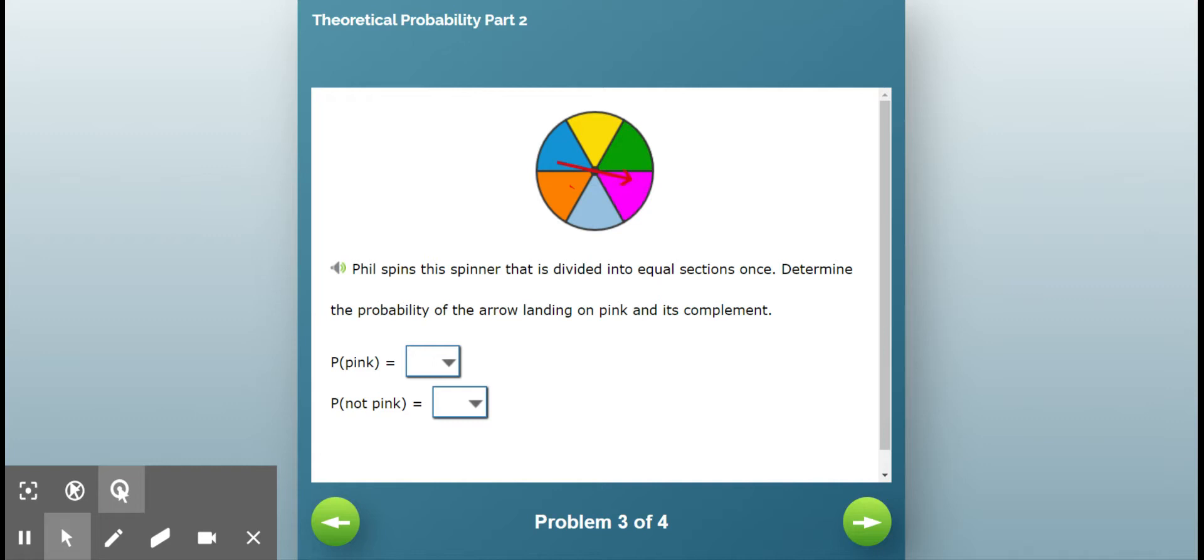Determine the probability of the arrow landing on pink and its complement. So now I want the probability that it does land on pink and its complement, which is the probability that it does not land on pink.